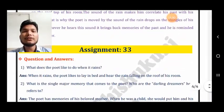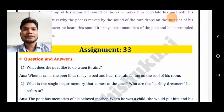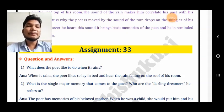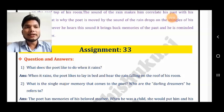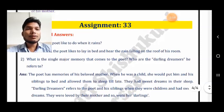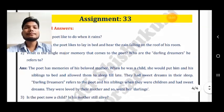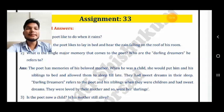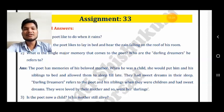Third poem: Rain on the Roof. First question: what does the poet like to do when it rains? When it rains, the poet likes to lie in bed and hear the rain falling on the roof of his room — he likes to listen to the raindrops falling on the roof. Second question: what is the single major memory that comes to the poet, and who are the darling dreamers? The poet has memories of his beloved mother. When he was a child she would put him and his siblings to bed and allow them to sleep till late. Darling dreamers refers to the poet and his siblings, who were loved by their mother.